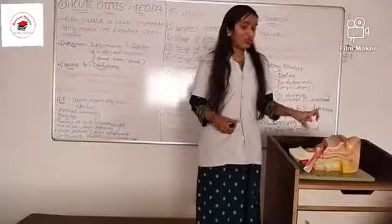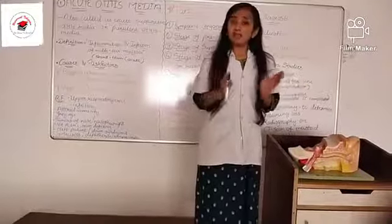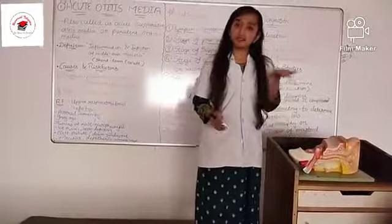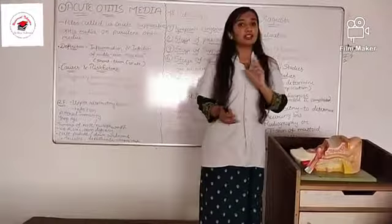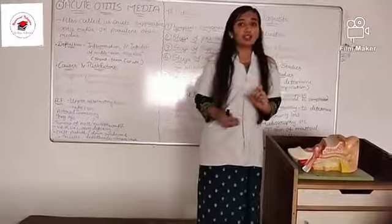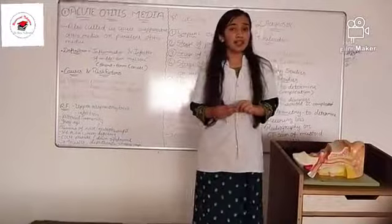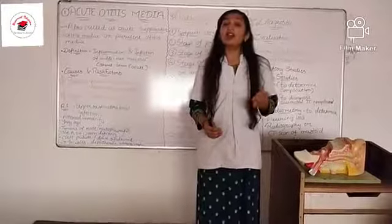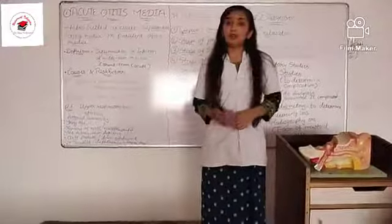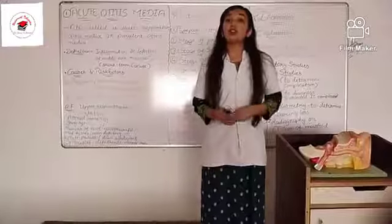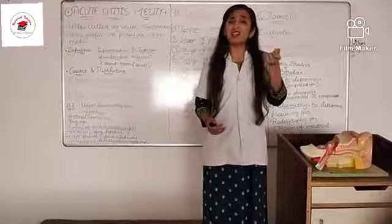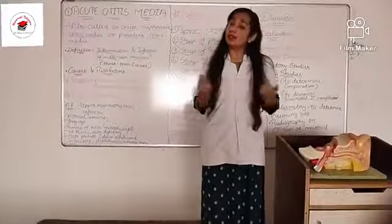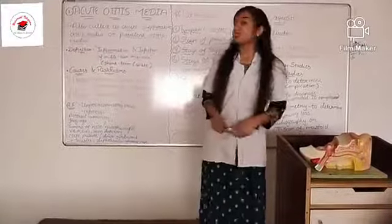The Eustachian tube becomes narrow, inflamed, and obstructed. Then pressure builds up at the same time — pressure in the tympanic membrane, which is the end part of the outer ear and the starting point of the middle ear. This results in high pressure, and ultimately leads to purulent discharge.